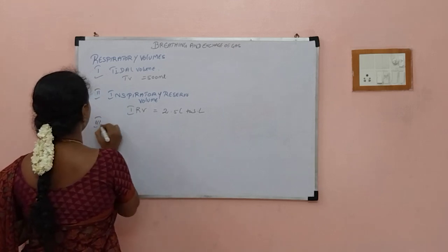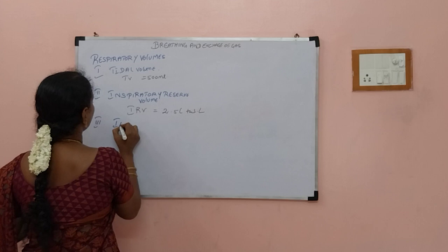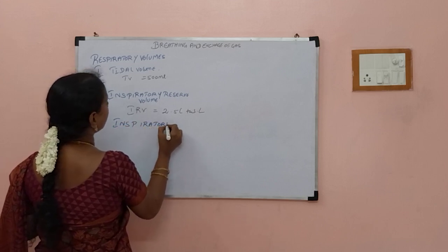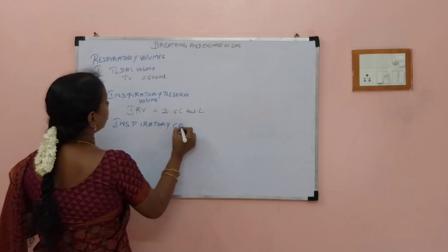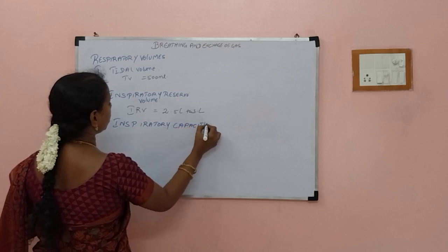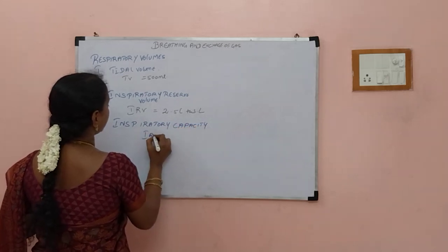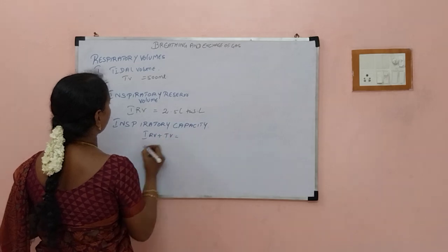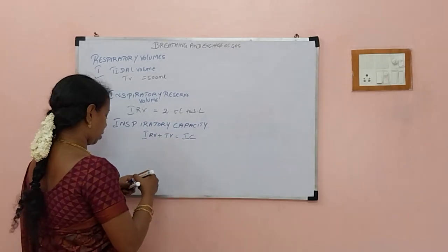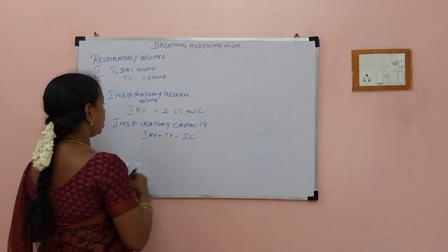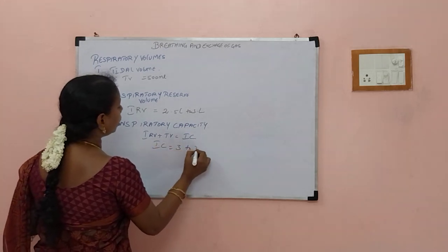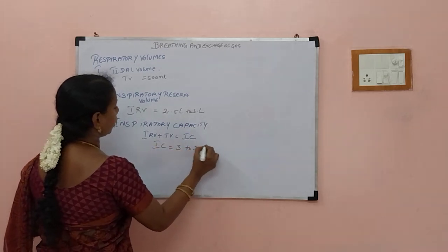The third one is inspiratory capacity. Inspiratory capacity is obtained by adding inspiratory reserve volume and tidal volume. So IRV plus TV equals IC — inspiratory capacity — which comes to 3 to 3.5 litres.